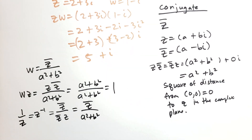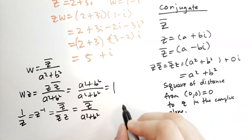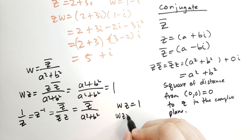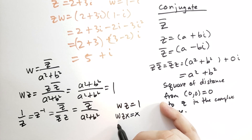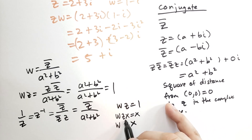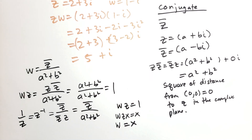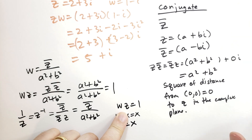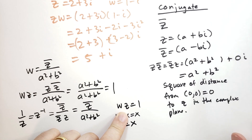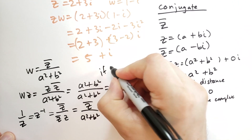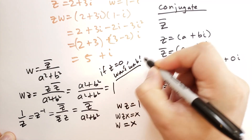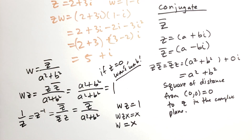You can prove for yourself that this inverse is unique. If W times Z equals 1 and there was another inverse X, then W·Z times X equals X, meaning W times 1 equals W, so W equals X. There is no other complex number you can multiply Z by to get 1. Note that this doesn't work if Z equals zero, because A and B would be zero and you'd be dividing by zero.